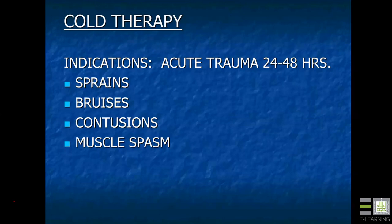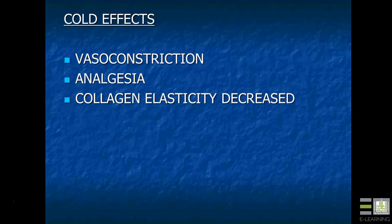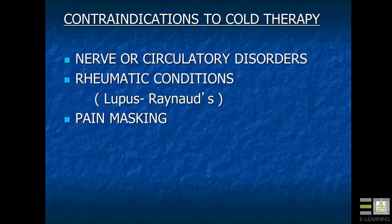Cold therapy indications include acute trauma within 24 to 48 hours, such as a motor vehicle accident or sports injury. Strains, bruises, contusions, and muscle spasms are all indications. The effects of cold include vasoconstriction, analgesia, and decreased collagen elasticity. The vasoconstriction and analgesia are good, but we must be careful not to fall into pain masking — we don't want the patient moving the affected area during healing while decreased pain may entice increased movement.